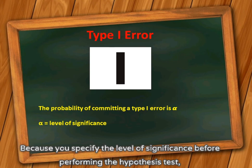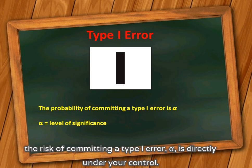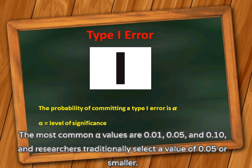Because you specify the level of significance before performing the hypothesis test, the risk of committing a type 1 error, alpha, is directly under your control. The most common alpha values are 0.01, 0.05, and 0.10. Researchers traditionally select a value of 0.05 or smaller.